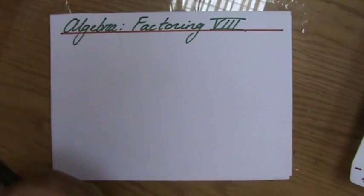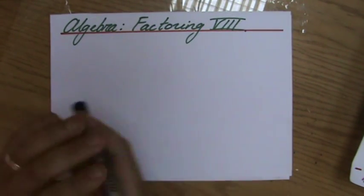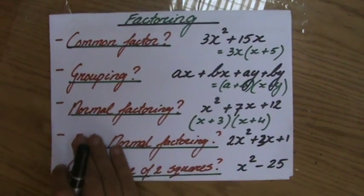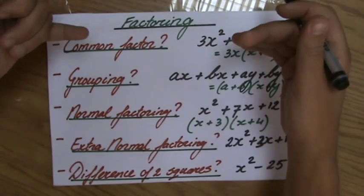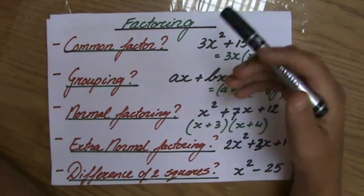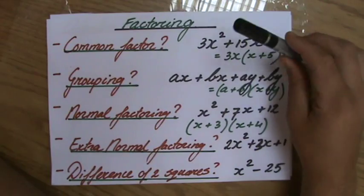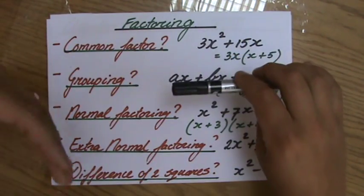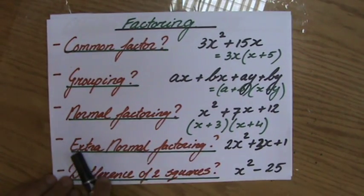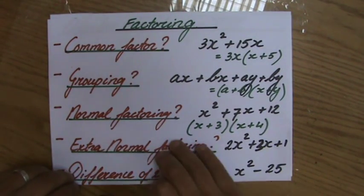We are still factoring expressions — the opposite of expanding if you like — so we're putting it in brackets. So far we have dealt with these questions, and every time we approach a question like this, you should ask yourself these questions in this order: Is there a common factor? Can I factorize it by grouping? Is it normal factoring? And now we're going to do extra normal factoring.